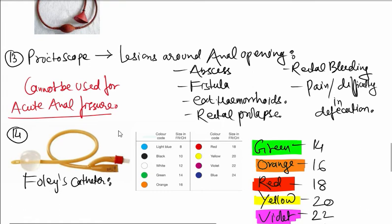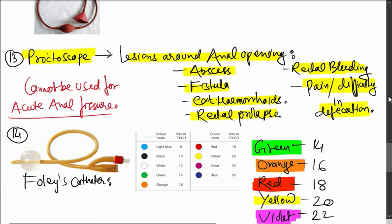Next one is the proctoscope. It is used for lesions around anal opening like abscess, fistula, external hemorrhoid, rectal prolapse, rectal bleeding, pain, difficulty in defecation. But it cannot be used in acute anal fissure.